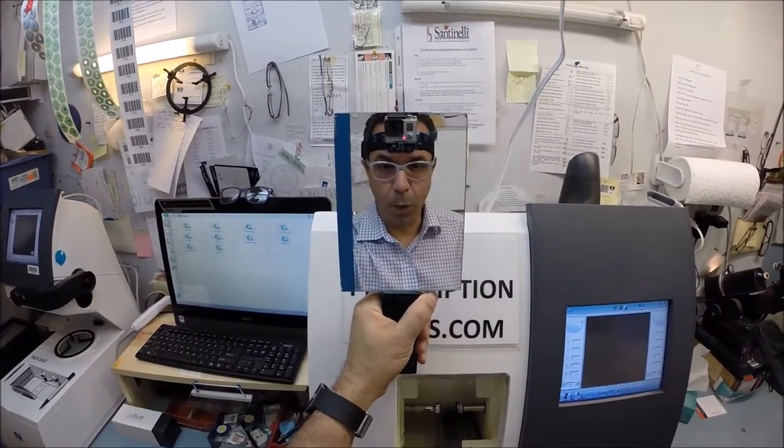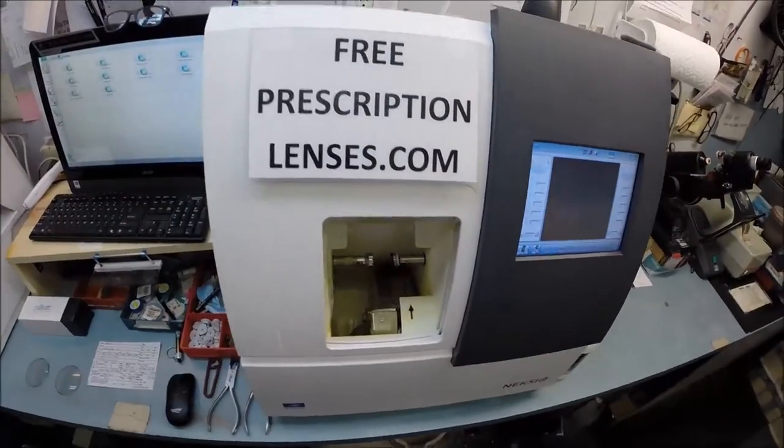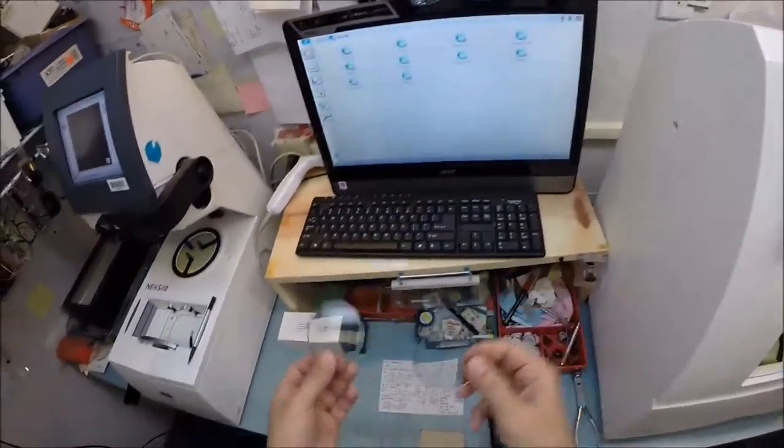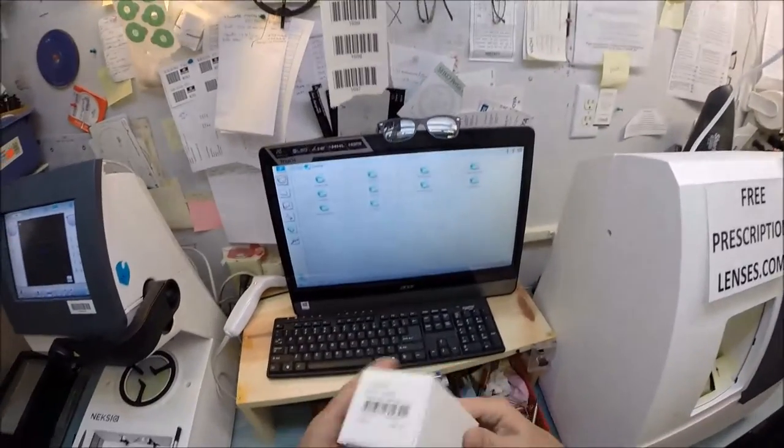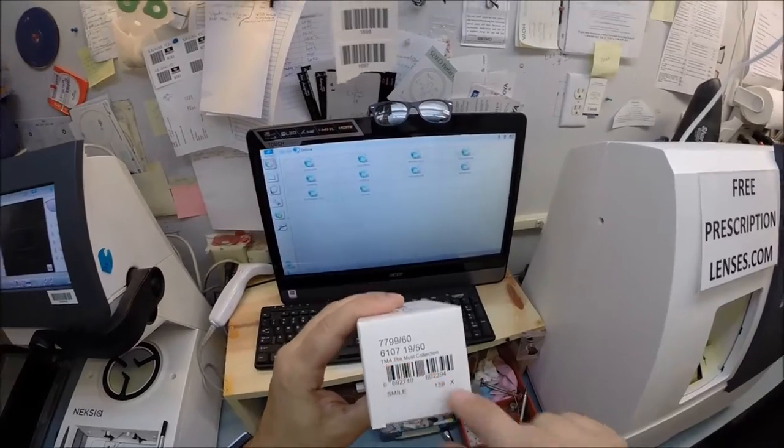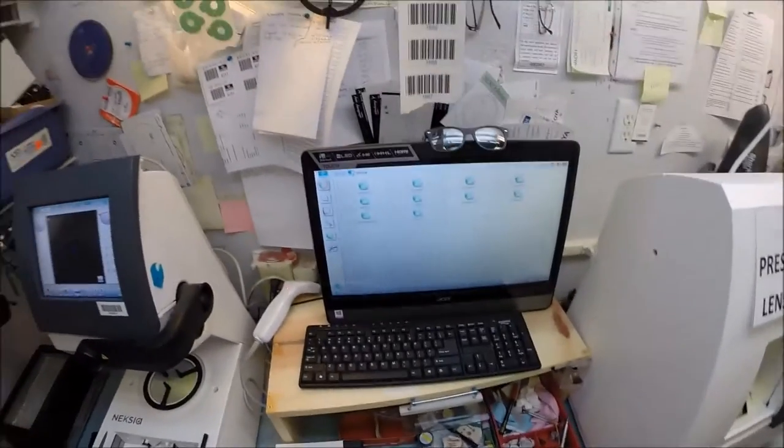Hey Mario in our nation's capital of Washington DC. Matthew here with FreePrescriptionLenses.com and with the help of my GoPro camera, I'm going to show you how I cut bifocal transition lenses for your new Silhouette Series 7799. The color is 6017 and let's show you how this works.